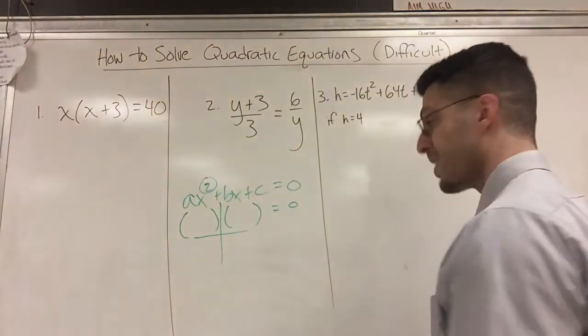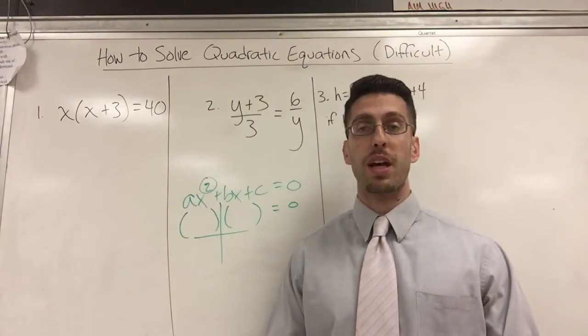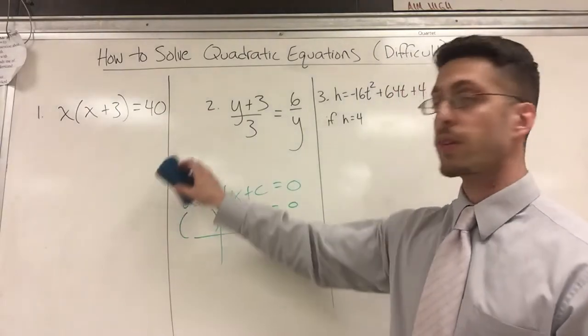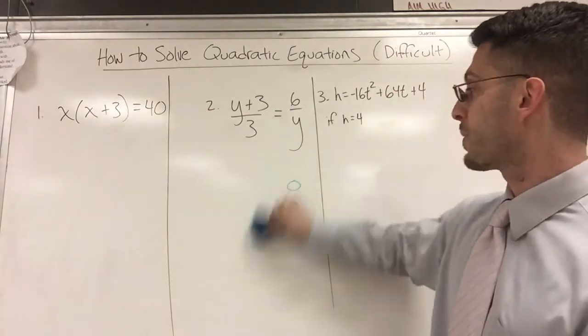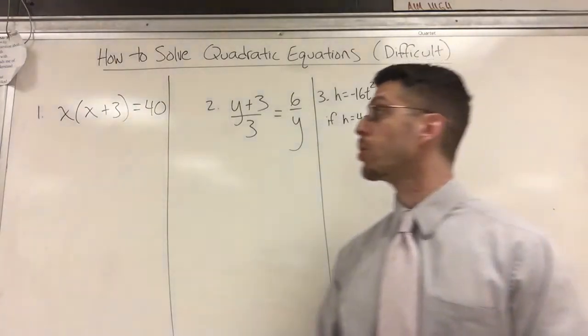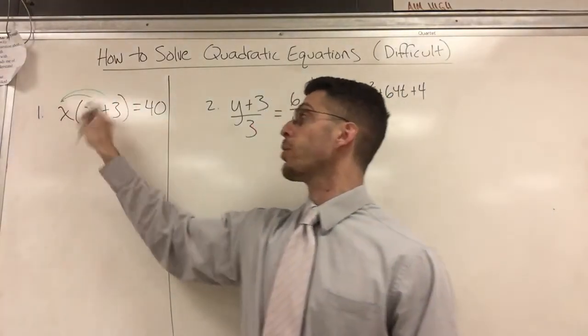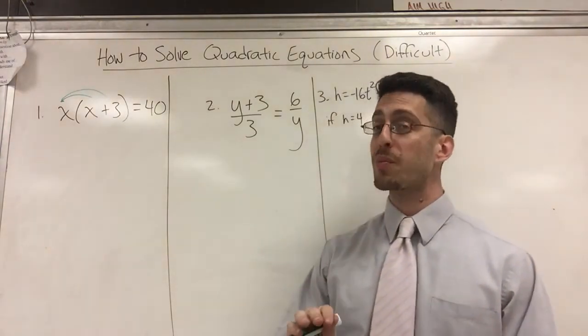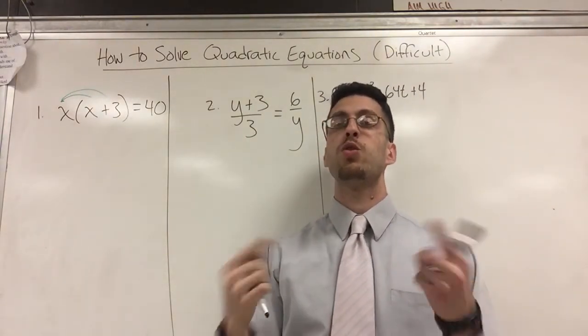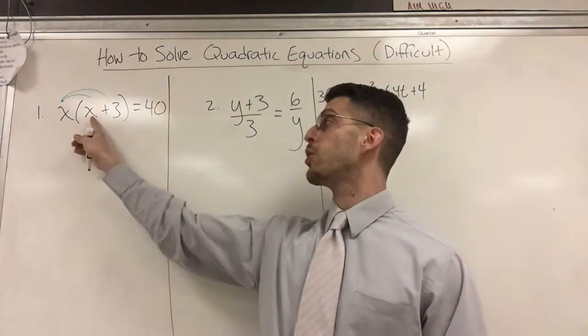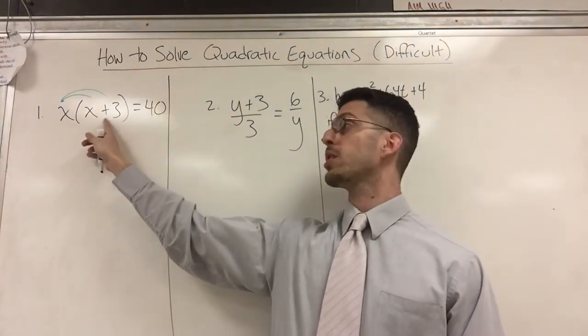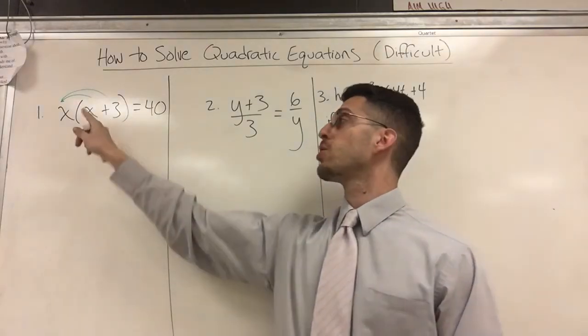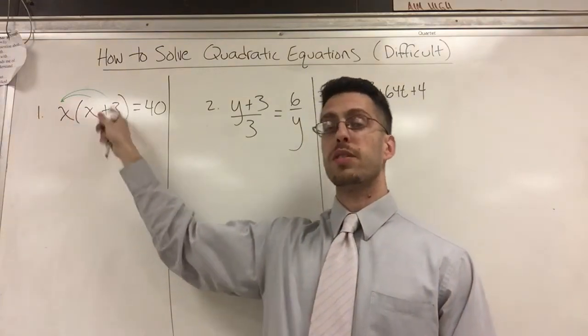If you look at number one, it doesn't even look like a quadratic, so you're probably asking why is this even one of the questions? Well, it is. First thing you want to do is distribute. If you see parentheses, people say PEMDAS, do the parentheses. You're not really doing the parentheses because PEMDAS says do what's inside the parentheses and you can't combine X and three. Please don't tell me that's three X. It's not. So the best I can do is to get rid of the parentheses. I'm going to distribute.